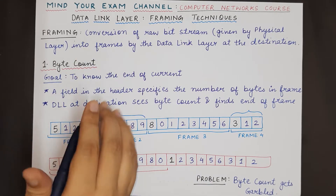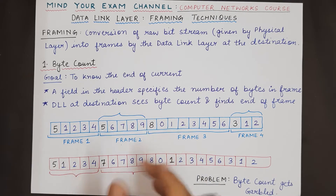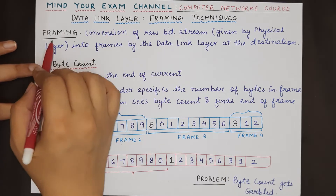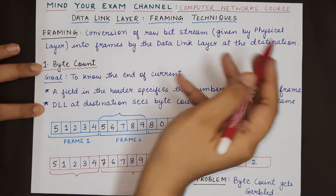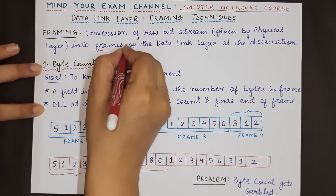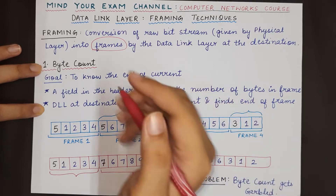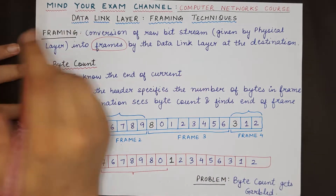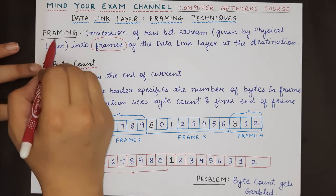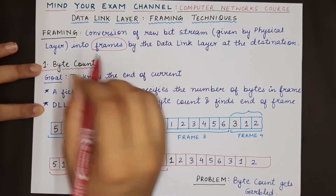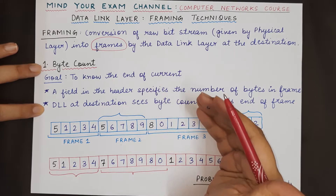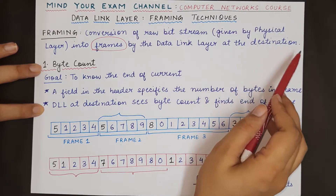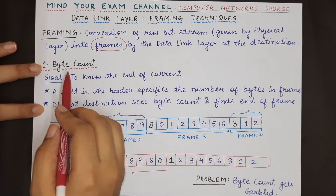Framing is a very important part of the data link layer functionality and there are four different ways in which framing can be performed. The first technique we will study today, and in the remaining three videos you will learn about the other three. Before starting, let us see a definition: framing is the conversion of the raw bit stream given by the physical layer to the data link layer into frames — that is, the construction of frames at the sender-side data link layer so they are correctly recognized by the DLL at the destination.